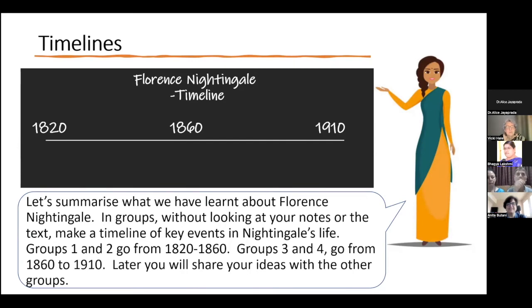And to make it interactive, she puts the students into groups. We'll talk about group work a little bit later, but she tells the group: without looking at your notes or the text, make a timeline of key events in Florence Nightingale's life. Then she gives groups different tasks. She has half of the groups—let's say there are four groups in the class—she has group one and two put events on the timeline from 1820 to 1860, and then groups three and four go from 1860 to 1910.